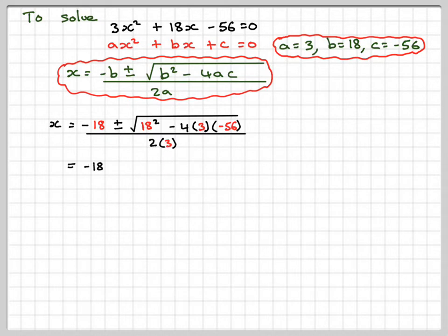So we're going to have -18 ± 18², which is 324, -4 times 3 times -56 is +672. So minus and minus makes a plus, divided by 6. So it's going to be -18 ± √(324 + 672), adding these two together we'll get 996, all divided by 6.